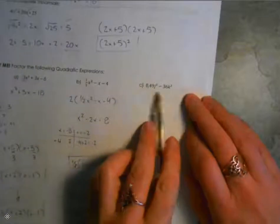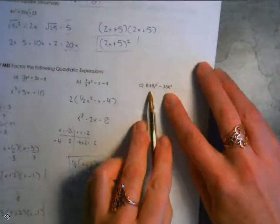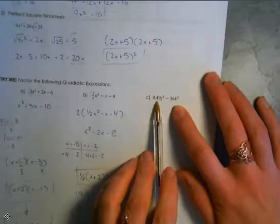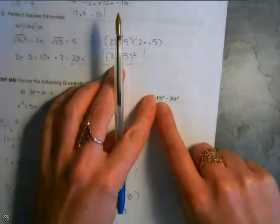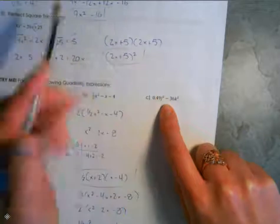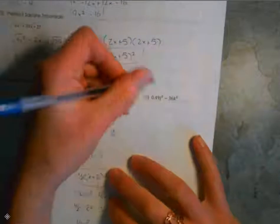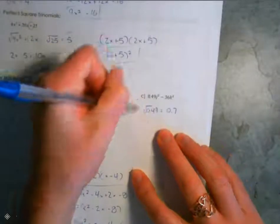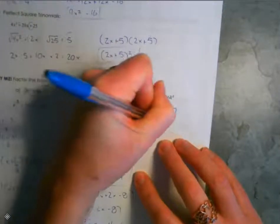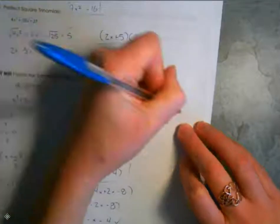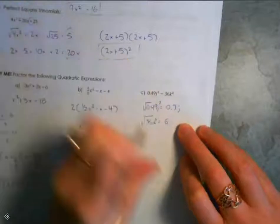Last one here: looking at it right away, there are two terms — that's a hint that you're looking at a difference of squares. 36 is obviously a perfect square, square rooting to 6. And 0.49 — students sometimes struggle with the decimal, but if you think of 49 as a whole number, 7 times 7 is 49, so it's a perfect square as a decimal too. The square root of 0.49 is 0.7, and the square root of 36 is 6. This one was j squared and k squared, so square root of j squared is j, and square root of 36k squared is 6k.